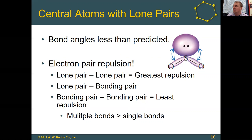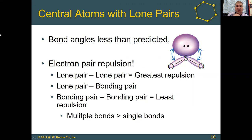In the case of sulfur dioxide, we would normally predict for a steric number of three about 120 degrees. Because of the lone pair on the sulfur, the lone pair takes up a little bit more space than a bond — it's more free to expand, and has the greatest repulsion. A lone pair against a lone pair is the strongest repulsion, a lone pair pushing against a bonding pair is in between, and a bonding pair against another bonding pair is the least repulsion. So 120 degrees is what we predict, but this bond angle is actually more like 118 degrees.